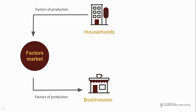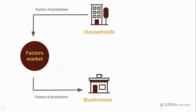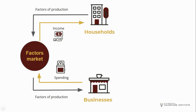Let's look at the flow between the first two participants, households and businesses. Households provide factors of production to the factors market. These factors of production are capital, land, labor, and entrepreneurship. Businesses need these to operate, so they go and purchase them from the factors market. To purchase them, they will spend money.